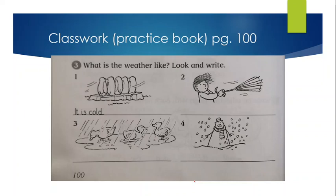What's the weather like? Look and write. It is cold. Now, come to second picture. What you can see here? Wind. So, we will write, It is windy. In picture number three, we can see rain. The sentence will be, It is raining. And in the last picture, we can see snow. It is snowing. Thanks for being with me.